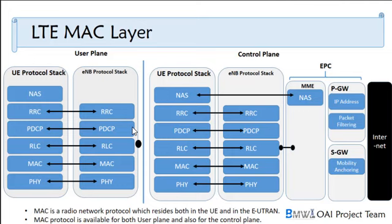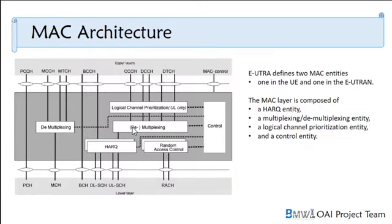There is an S1 interface between the eNodeB and the EPC. The EPC acts as a central database. Moving on to the MAC architecture — EUTRAN stands for Evolved UMTS Terrestrial Radio Access Network. It defines two MAC entities: one for the UE and one for the EUTRAN. The MAC layer is composed of a HARQ entity, a multiplexing and demultiplexing entity, a logical channel prioritization entity, and a control entity.